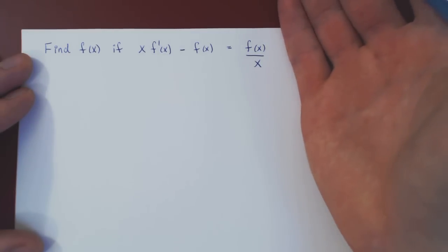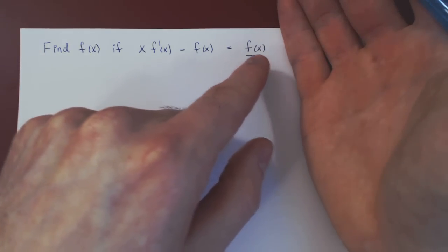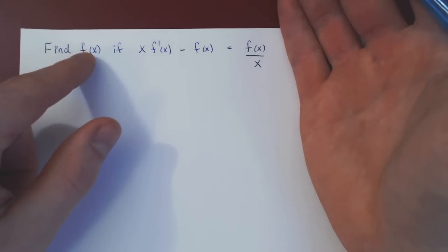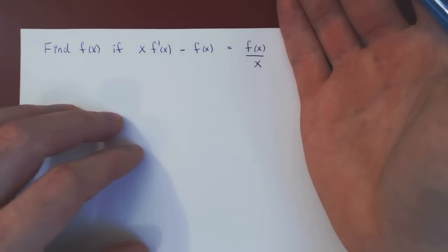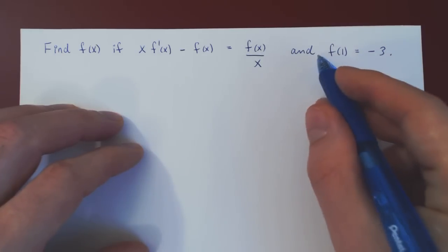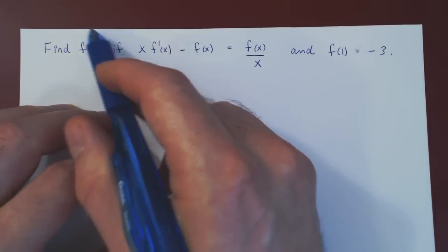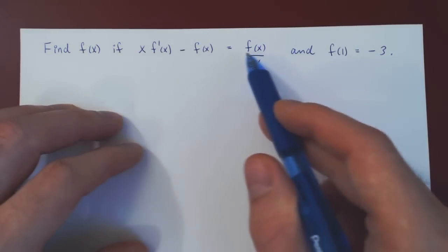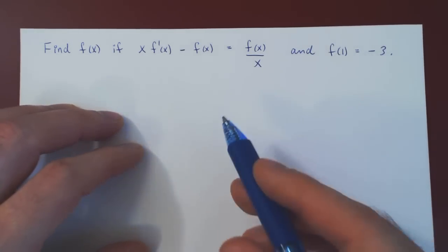Without the initial condition, there would be an infinite number of solutions — functions f of x that would satisfy this equation. But if we specify an initial condition, this determines a unique function f that satisfies simultaneously the differential equation and the initial condition.